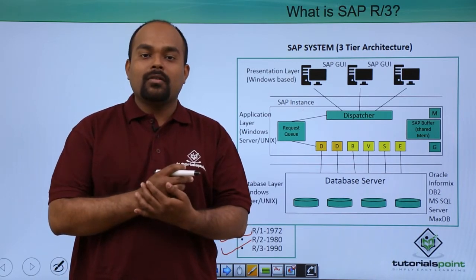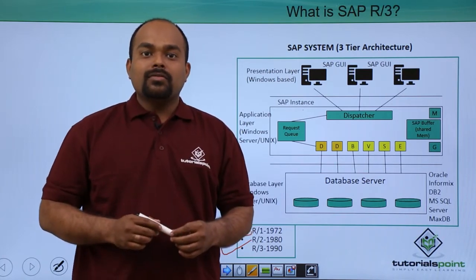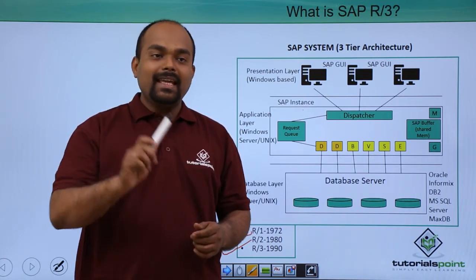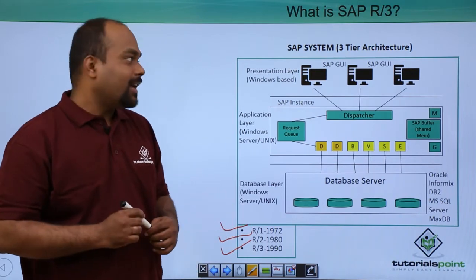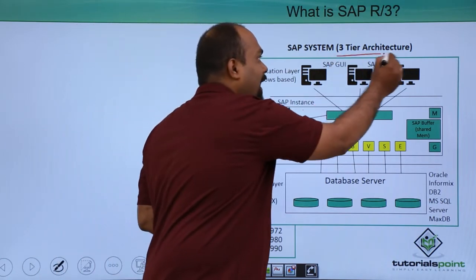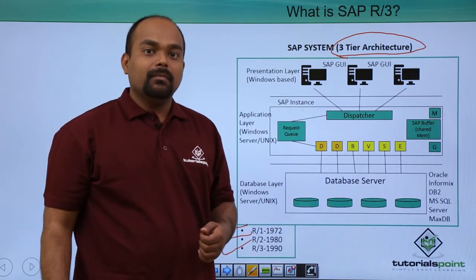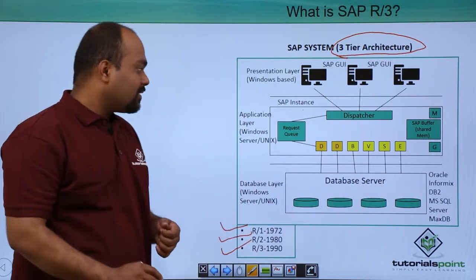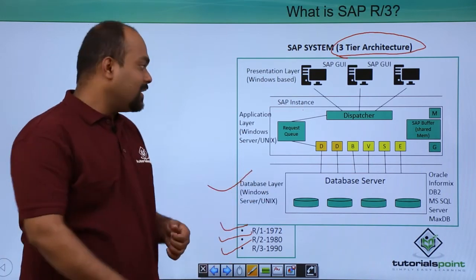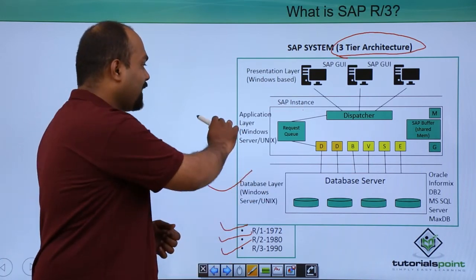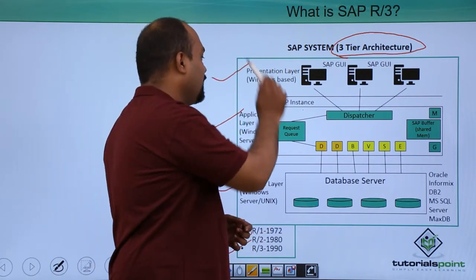What does the R stand for, and what does the 3 stand for? The 3 represents the three layers in SAP — the three-tier architecture. The base is the database layer, the middle is the application layer, and the top is the presentation layer.